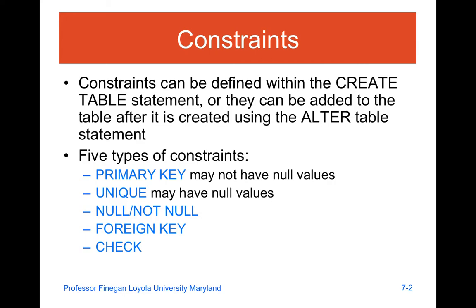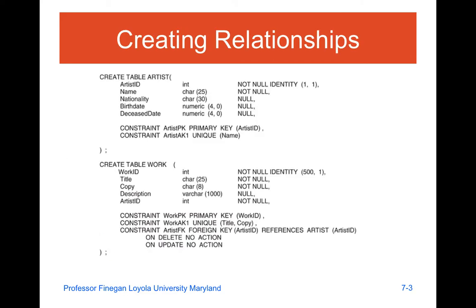Additionally, anything that is classified as unique may not have null values. NULL, NOT NULL, FOREIGN KEY, and CHECK are all different types of constraints that we're going to talk about over the next several classes.